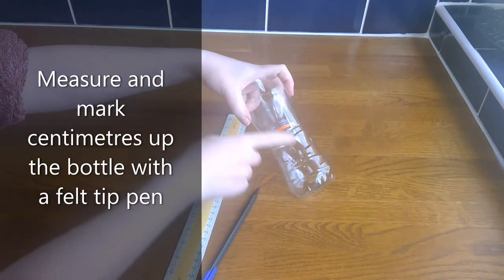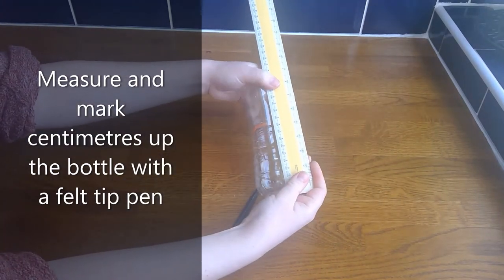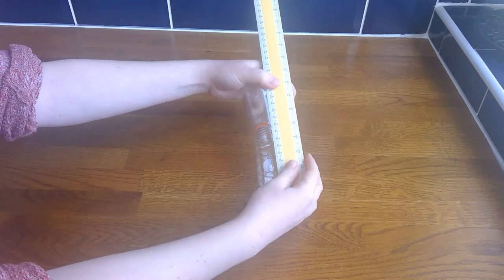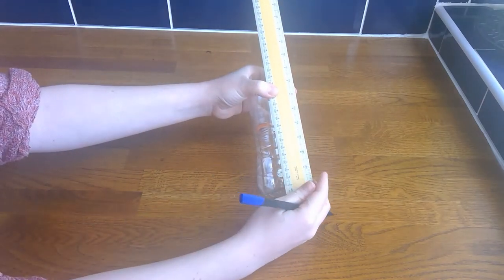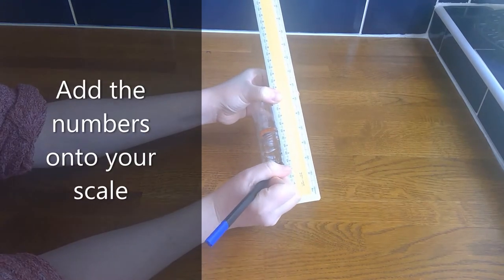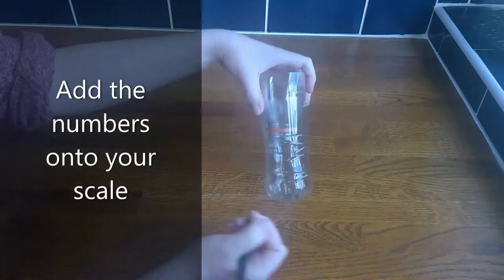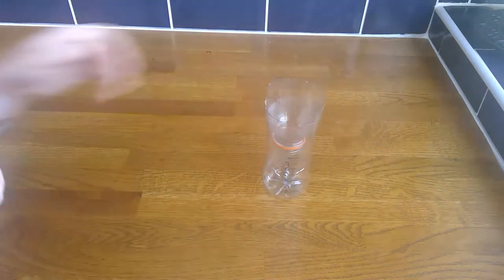Now I just need to mark some measurements up the side of my bottle. I'm going to take my ruler and mark off the centimeters up the side of the plastic bottle. If the felt tip isn't really working on the plastic bottle, you can always put a strip of paper tape up the side and write on that. I'm just going to add the numbers, and then I can measure how much rain we're getting.